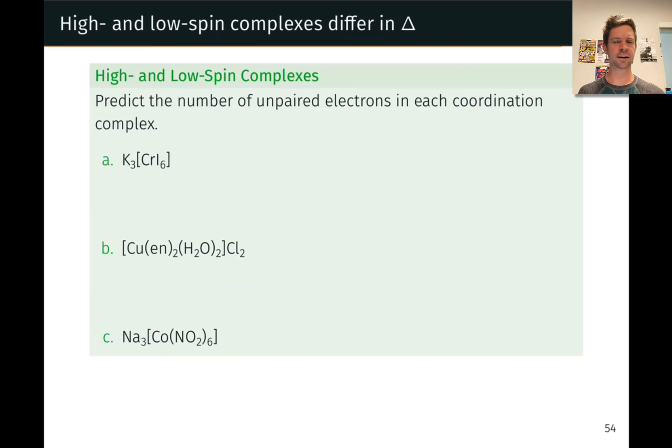Now each of these contains a complex ion, and so the first thing we want to do in each case is just split this compound into its component ions and essentially throw away the counter ions and just focus on the complex ion. So here, for example, it's the hexaiodochromium complex here, chromium 3, that is the important bit of this, and we can note that the chromium is in the plus 3 oxidation state based on the overall charge and the negative 1 charge on the iodide ligands, and so this is a d3 situation.